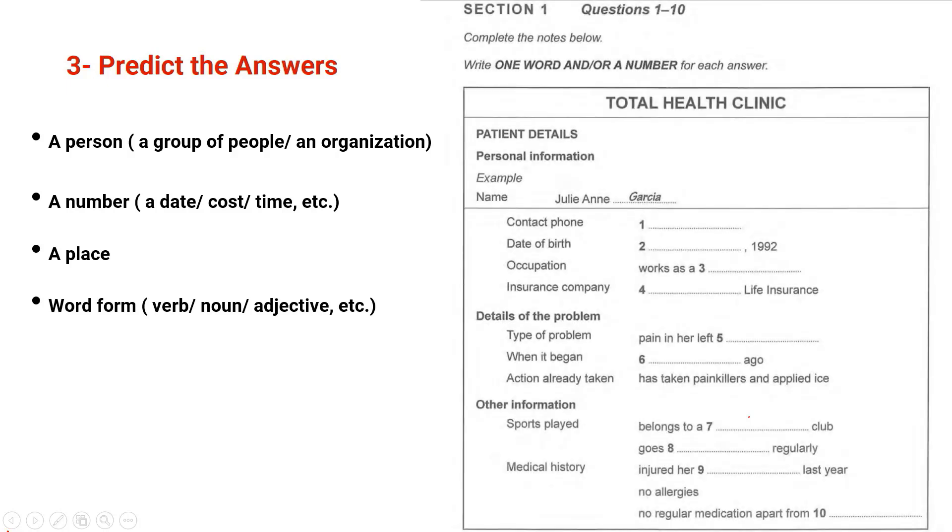And let me show you how we do this. This is a card on patient details, personal information. The name Julian Garcia. The first question is contact number, so you know that you are going to write a phone number. Date of birth, and here 1992, so you expect something like, for example, 3rd of May, because of the year. So you expect the day and the month.